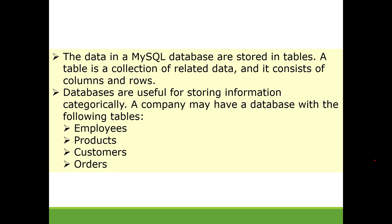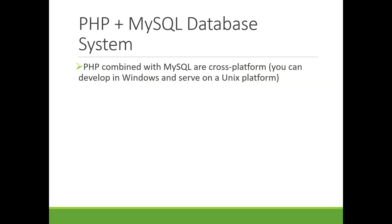The data in a MySQL database is stored in tables. A table is a collection of related data and it normally consists of columns and rows. For example, when we created the voting management system, we created a user table with columns like first name, surname, email address, and contact. Databases are useful for storing information categorically — a company may have tables for employees, products, customers, orders, etc.